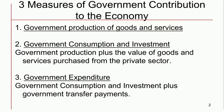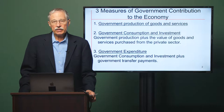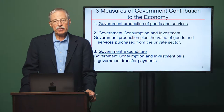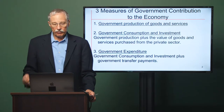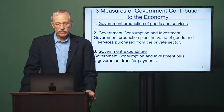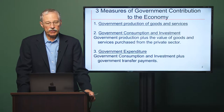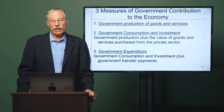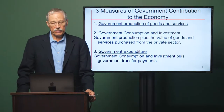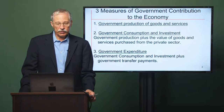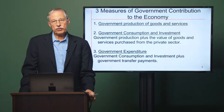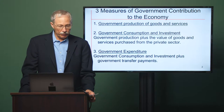Here are three measures of the government's contribution to the economy. First is called government production of goods and services — things such as education and police, the things actually produced by government employees. The second is called government consumption and investment, which adds to government production the value of goods and services that are purchased by the government from the private sector.